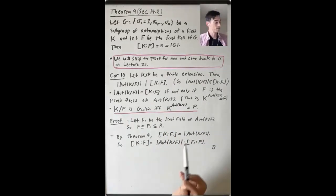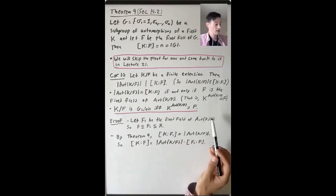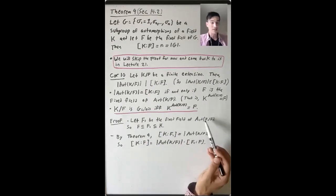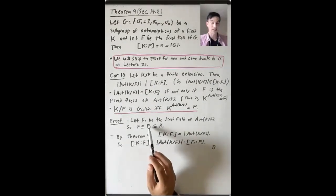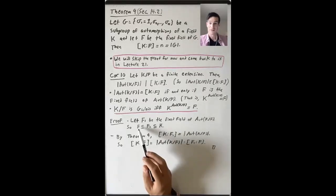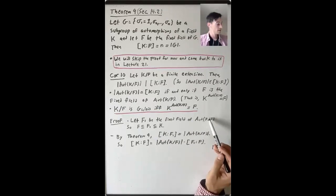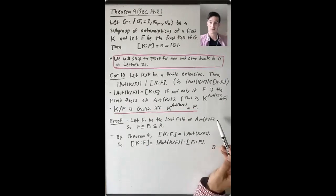Let's prove this. We have this group of automorphisms of K fixing F — we know this is a finite subgroup of the group of automorphisms of K — and it has some fixed field: the subfield of K consisting of all elements fixed by everything in this group. Certainly every automorphism in Aut(K/F) fixes F, that's part of the definition. But maybe there are other things — maybe there's some larger field where everything in that larger field is fixed by every automorphism of K fixing F.